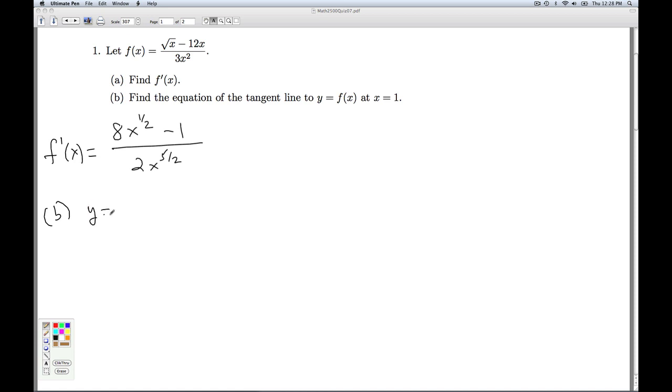So the point-slope form of a line is y equals m times x minus x naught plus y naught. The m is going to be the derivative at that point, and the y naught is going to be the function value at that point. So for tangent lines, y equals f prime at x naught, x minus x naught, plus f of x naught.